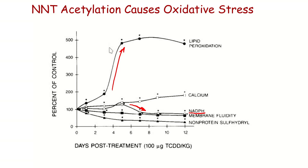This is a lipid peroxidation graph — oxidative stress in cells that were given TCDD, so we activated the aryl hydrocarbon receptor. Oxidized lipids increase slowly for a while and then really explode. The point at which they really explode coincides fairly tightly with — or perhaps precedes a little — this dropping level of NADPH. So it's possible that these two events are correlated: as oxidative stress increases, NNT is becoming acetylated and NADPH levels are dropping.